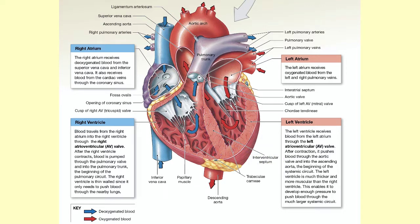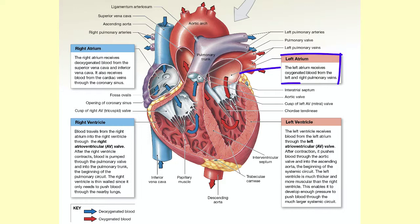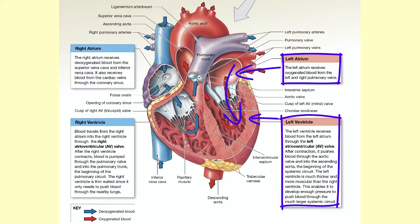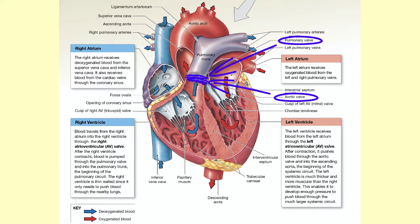In summary, deoxygenated blood returns to the right atrium, travels to the right ventricle, and then into the pulmonary circuit. Blood then returns to the left atrium, travels to the left ventricle, and then into the systemic circuit. The tricuspid and mitral valves prevent regurgitation into the atria from the ventricles, and the pulmonary and aortic valves prevent backflow into the ventricles from the arteries.